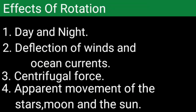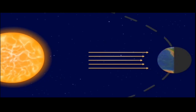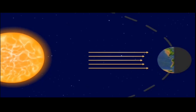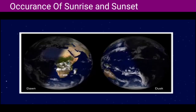We will discuss the effects of rotation first. The first effect is the cause of day and night. As the earth rotates, the side which faces towards the Sun will have day, and the side which is away from the Sun will have night. The line separating the day and night halves is known as the circle of illumination.